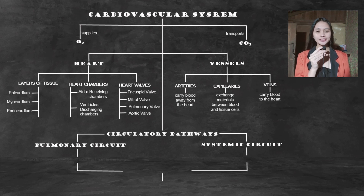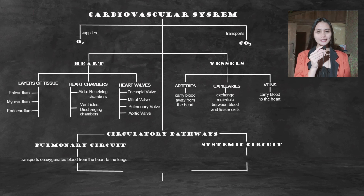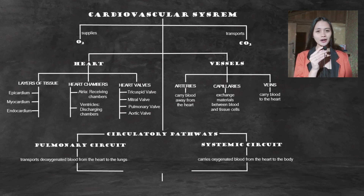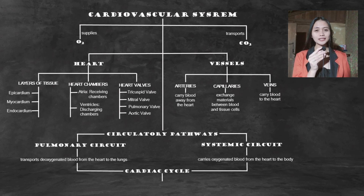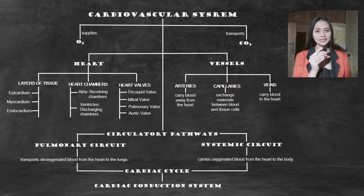The cardiovascular system has two circulatory pathways: pulmonary and systemic. Pulmonary circulation carries oxygen-poor blood from the heart to the lungs. Systemic circulation carries oxygenated blood from the heart to the body. The cardiac cycle is the contraction and relaxation of the myocardium in the walls of the heart chambers. The heart also has a special electrical system called the cardiac conduction system that stimulates the heart to beat.